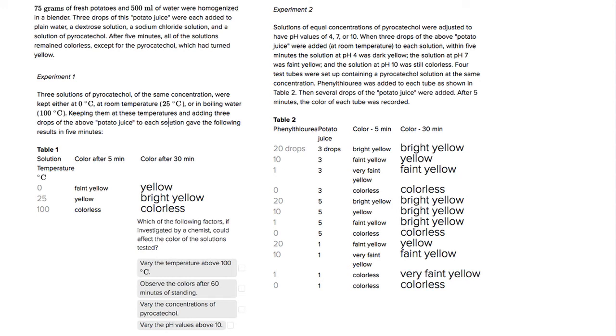This is Sophie Heller and this is an ACT science question. We're looking at which of the following factors could affect the color of the solutions tested. Remember in this experiment we have a solution of pyrocatechol and we're going to add different drops of potato juice at varying temperatures and pH levels in order to see if it turns yellow, dark yellow, faint yellow, or has no color.